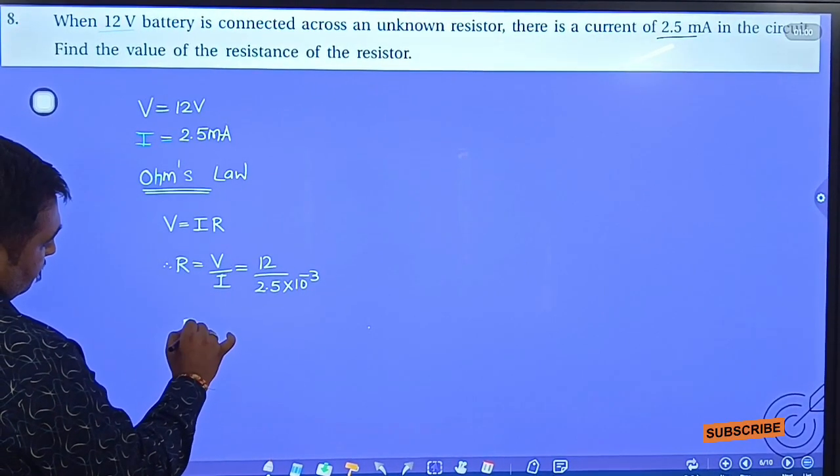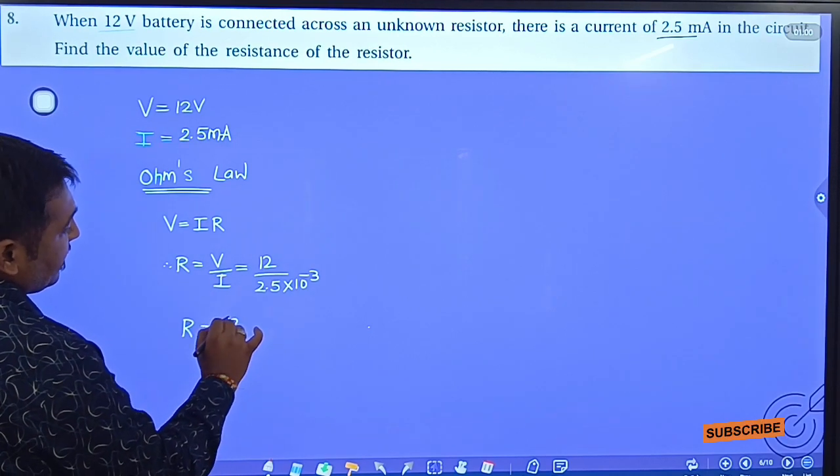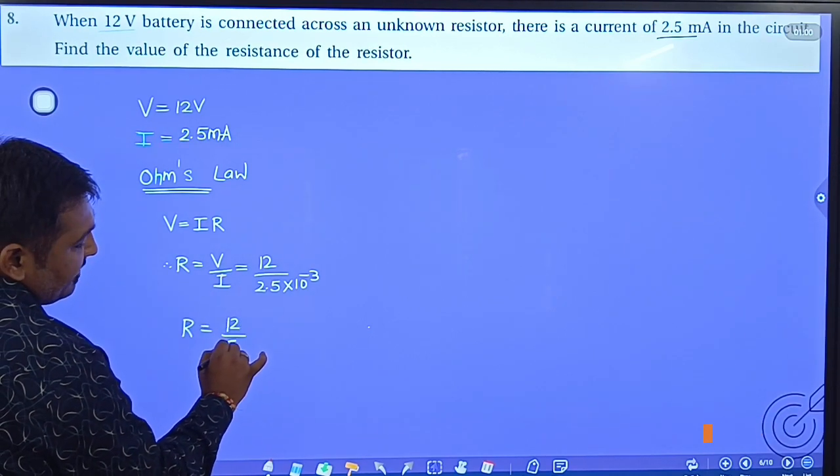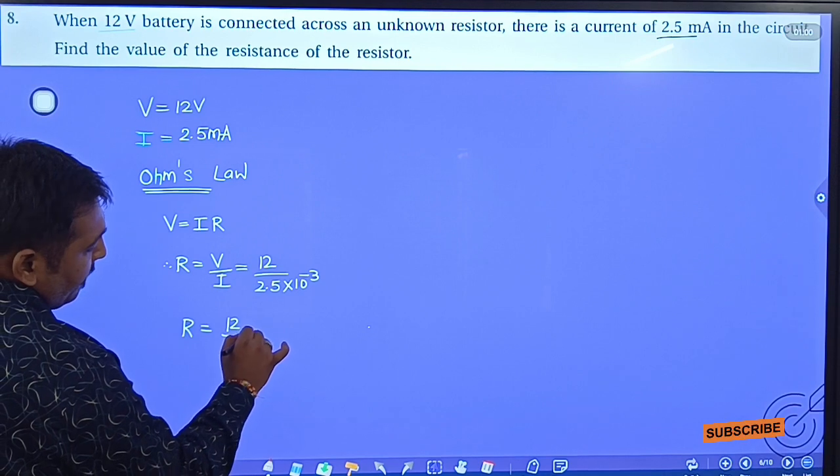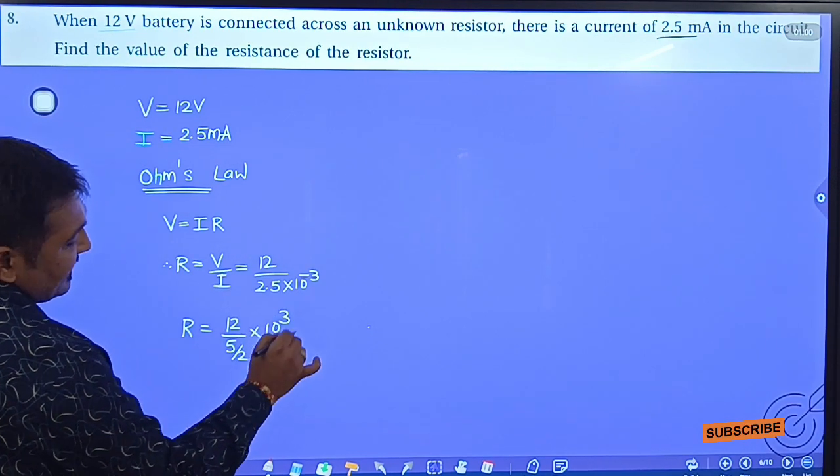R equals 12 divided by... 2.5 means 5 upon 2. Minus 3 will go up, so plus 3.